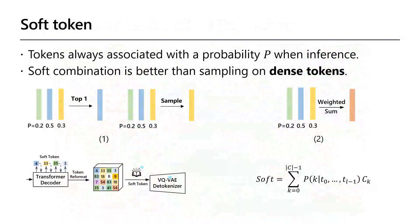We represent the dense tokens as soft tokens. In a typical autoregressive prediction procedure, the token as the task solver output is selected deterministically or sampled by its probability, as shown in figure 1, and its embedding is used as input to the task solver decoder for the next prediction step — this approach is called hard inference. However, we find that treating the dense token as a token combination weighted by its probability can achieve better results, as shown in figure 2. The soft dense token is passed to the detokenizer and used as the next token input of the task solver.